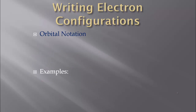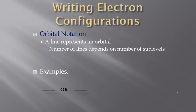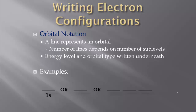Now let's look at actually writing electron configurations. There are two different ways to show them. The first one is orbital notation. In orbital notation, we use a line to represent an orbital. The number of lines depends on the number of sublevels we are filling. The energy level and orbital type are written underneath the set of lines. For 1S, we have one line because S only has one orbital, and we put the energy level there.